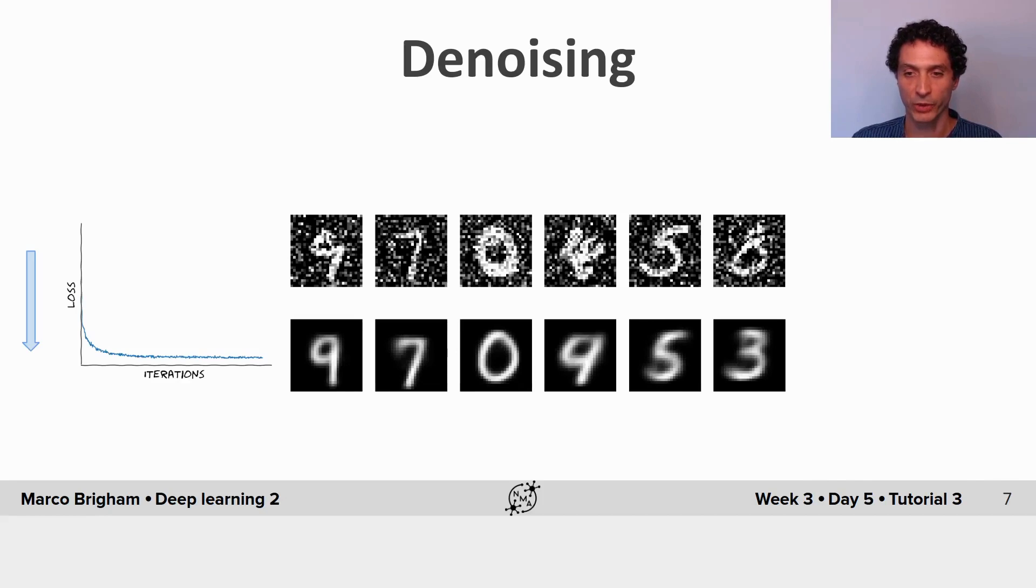Now after we train the autoencoder, we see there's some improvement. So this 8 becomes a 3, but we see that digit 5 is correctly reconstructed as a digit 5.